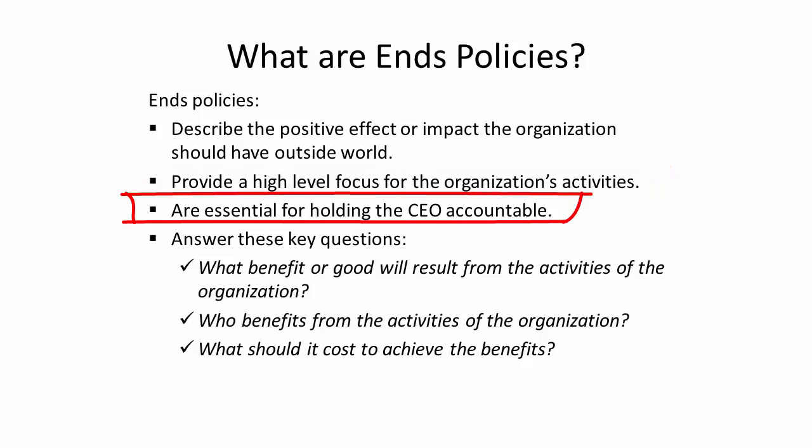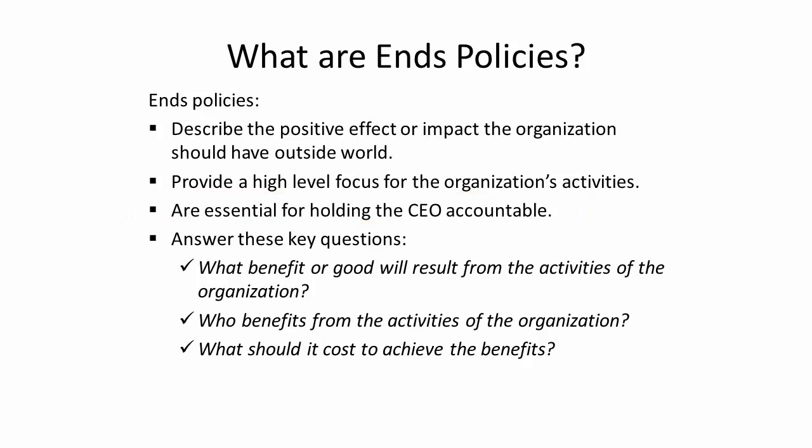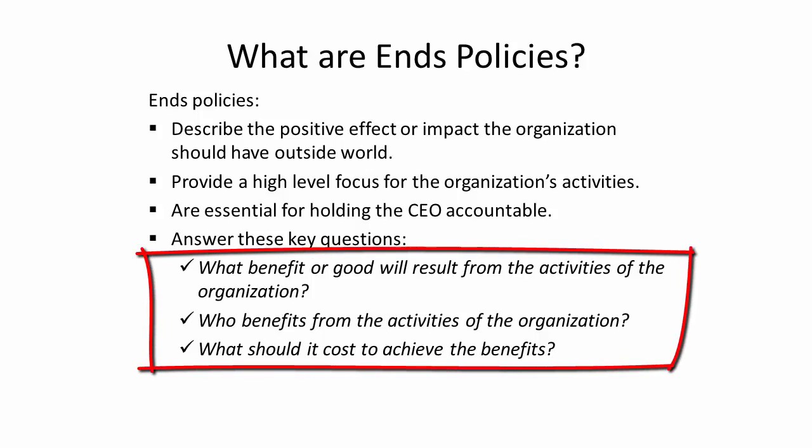Ends policies are also critical to helping hold the CEO accountable. We want the CEO or executive director to be accountable for getting results — extending effort and having good intentions really aren't enough. There are a number of guidelines for writing ends policies. The simplest guidance is to write policies to answer these three questions: What benefit or good will result from the activities of the organization? Who benefits from these activities? And what should it cost to achieve the benefits?